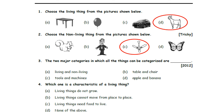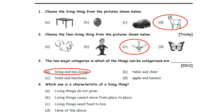Third one: the two major categories in which all things can be categorized are — Option A: Living and non-living things. Option B: Table and Chair. Option C: Tools and Machines. Option D: Apple and Banana. All things are categorized into two categories: Living and non-living things. So, Option A is the correct answer.